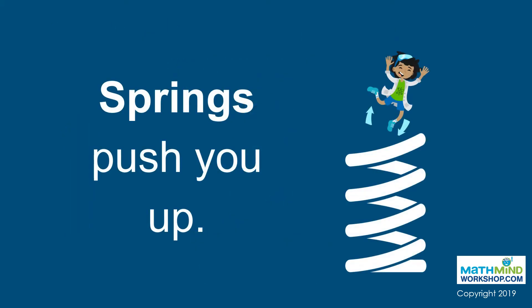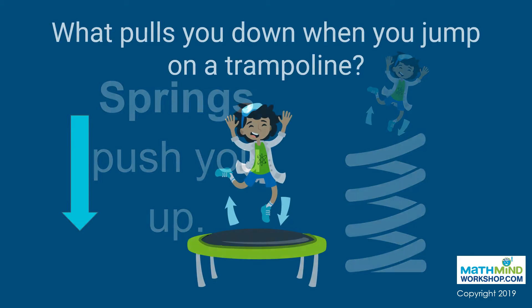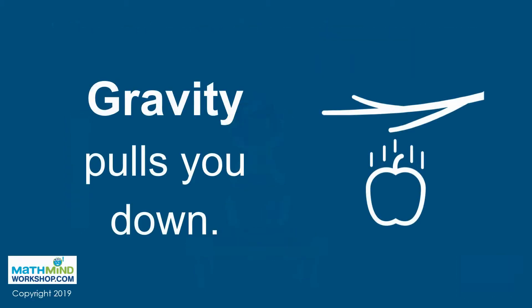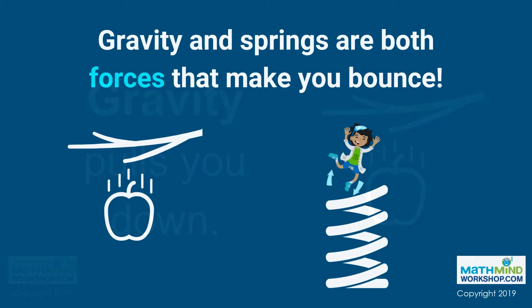The springs that hold onto the net actually provide the push that makes you bounce. Once you're up in the air, what force pulls you back down again? Gravity, of course. The springs on a trampoline push you up and gravity pulls you down. Together these simple forces make you bounce, but some forces are more complex than they may appear.